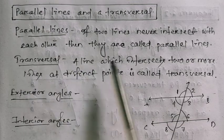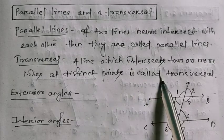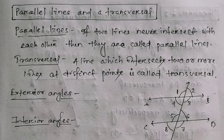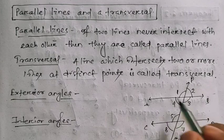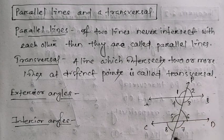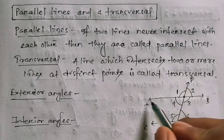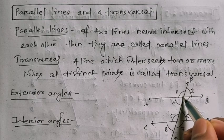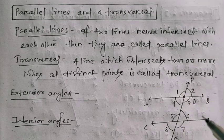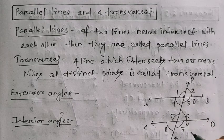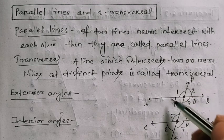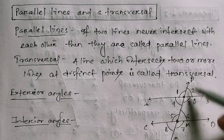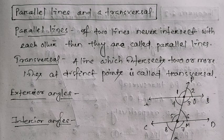Next, what is a transversal? A line which intersects two or more lines at distinct points — that means different points — is called a transversal. Here, PQ intersects AB at point O and intersects CD at point M, so PQ is called the transversal of AB and CD.